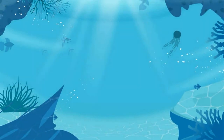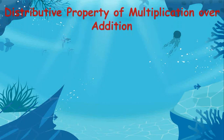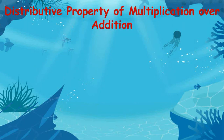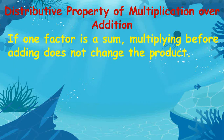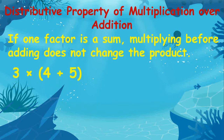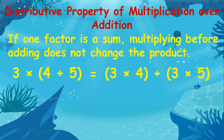The last property is the distributive property of multiplication over addition. It states that if one factor is a sum, multiplying before adding does not change the product. An example is 3 times (4 plus 5) is the same as 3 times 4 plus 3 times 5, with the same answer of 27.